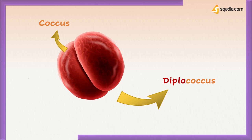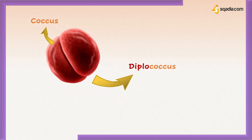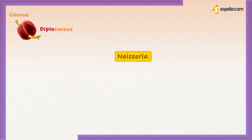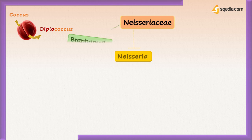The genus Neisseria is one of the genera included in the family Neisseraceae, while the others are Branhamella, Moraxella, and Acinetobacter.